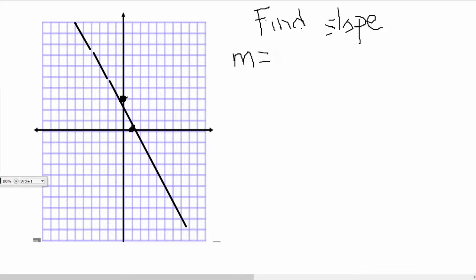And the slope formula says this: m is equal to y2 minus y1 over x2 minus x1.